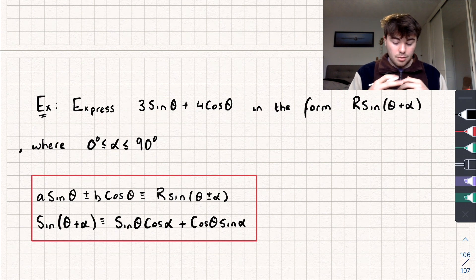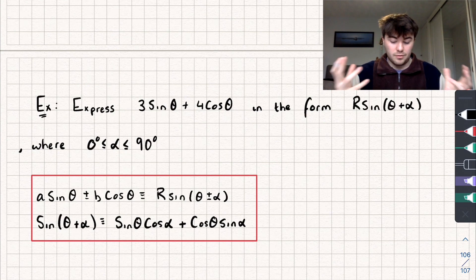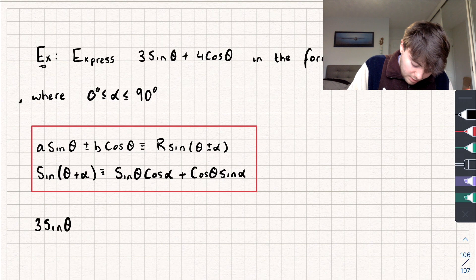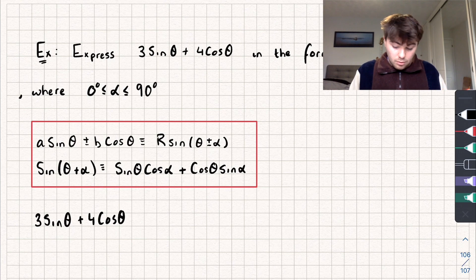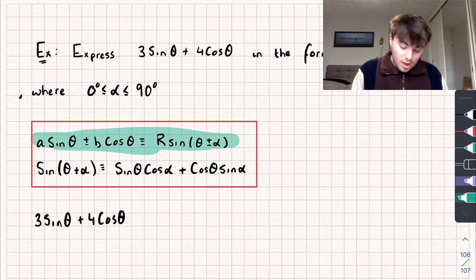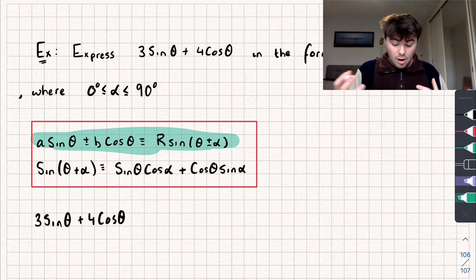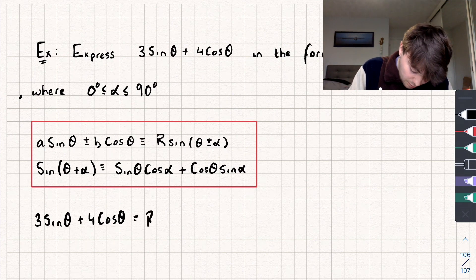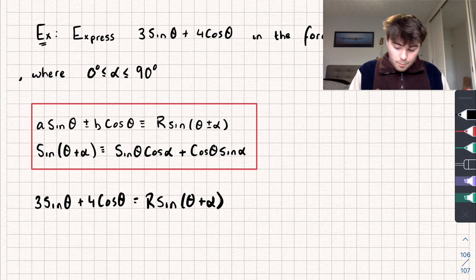Let's look at an exam question. We want to express 3 sinθ + 4 cosθ in the form R sin(θ + α), where alpha is between 0 and 90 degrees. We write 3 sinθ + 4 cosθ and recognise this equals R sin(θ + α) — and because we're adding, it's the plus form.